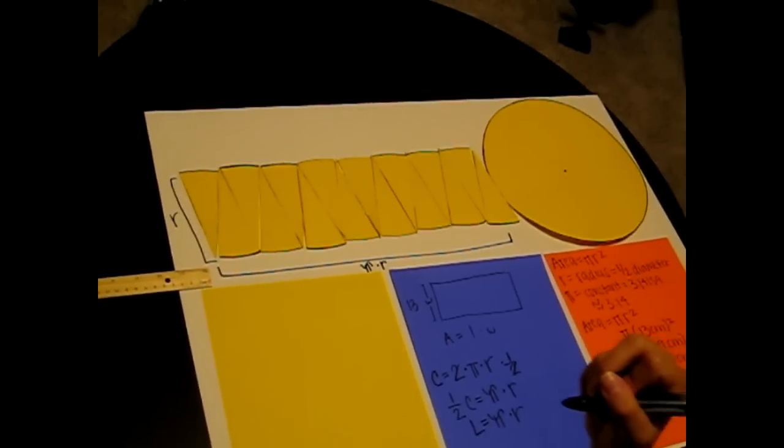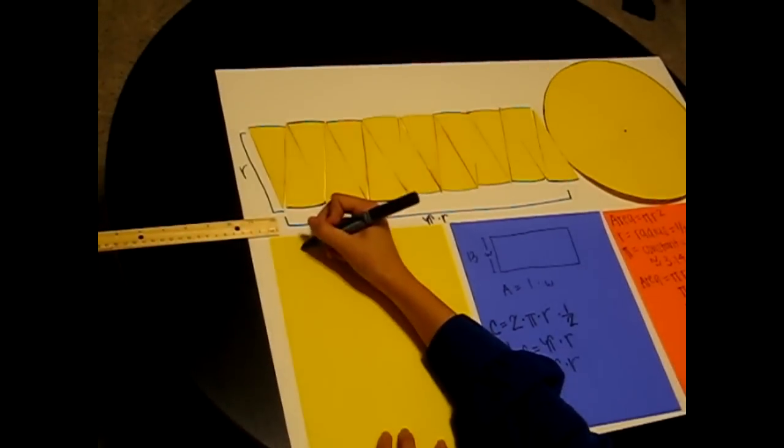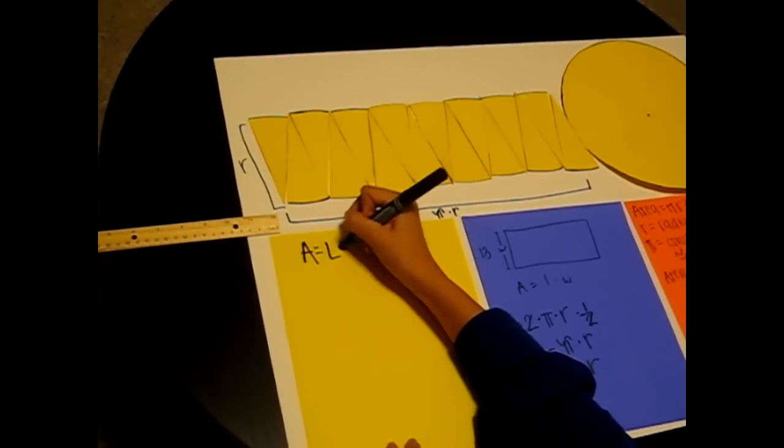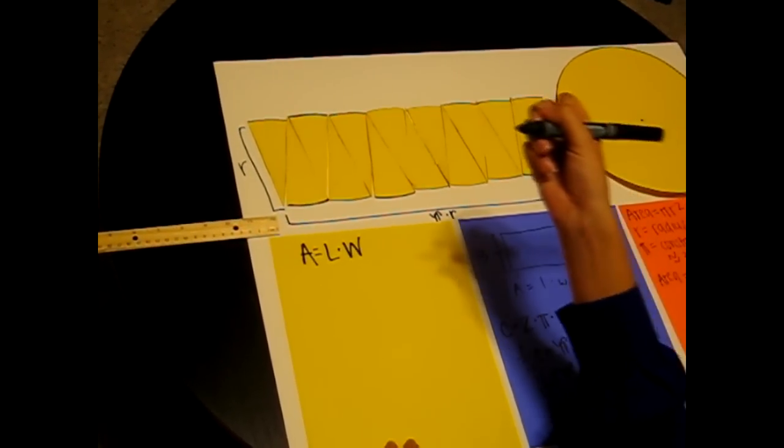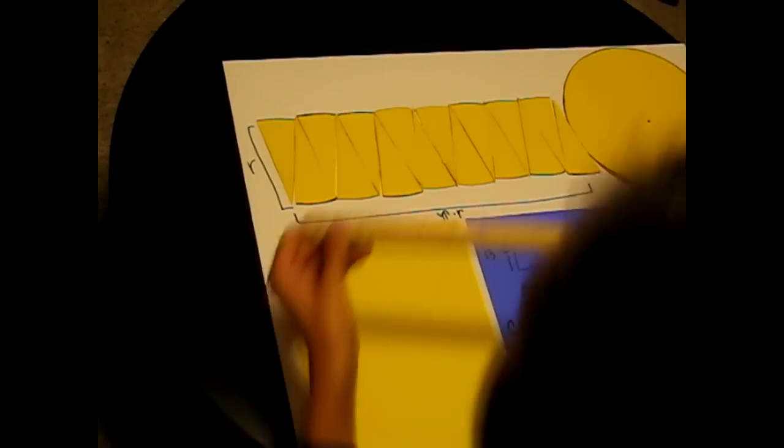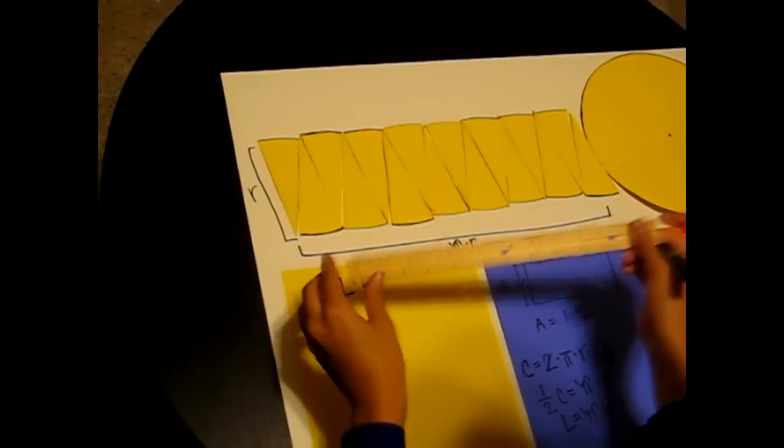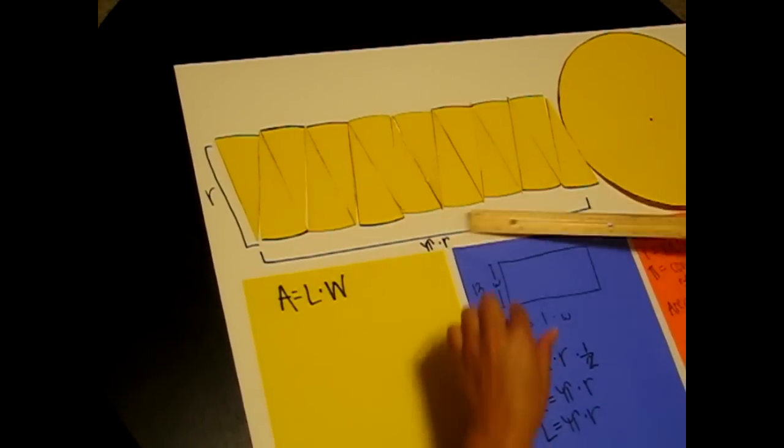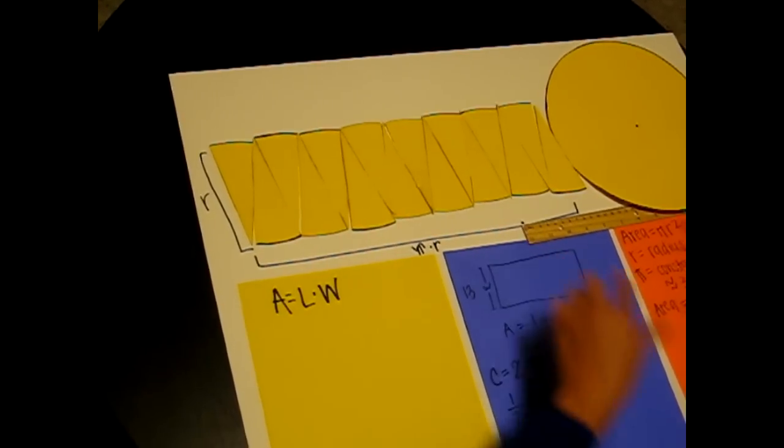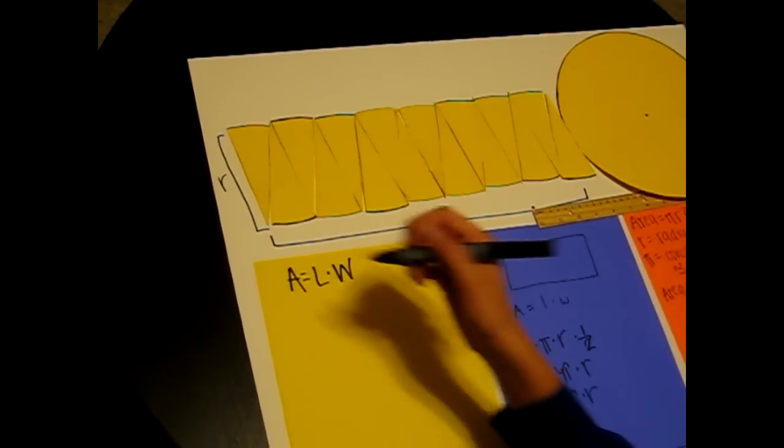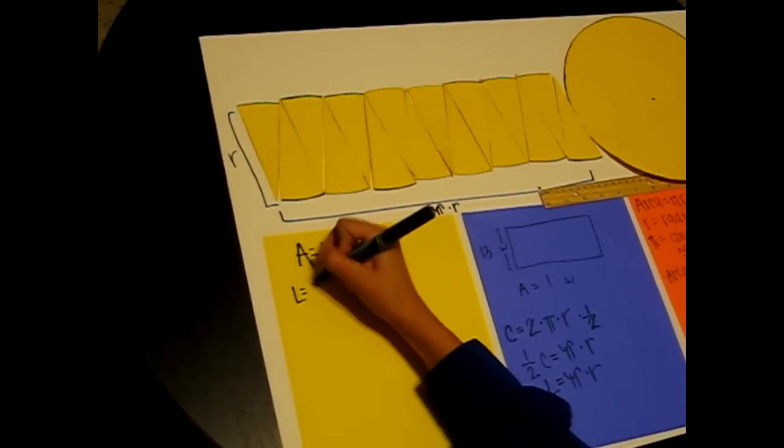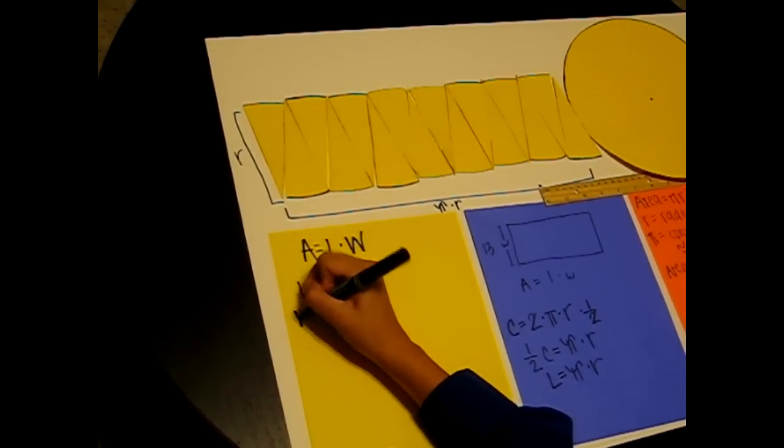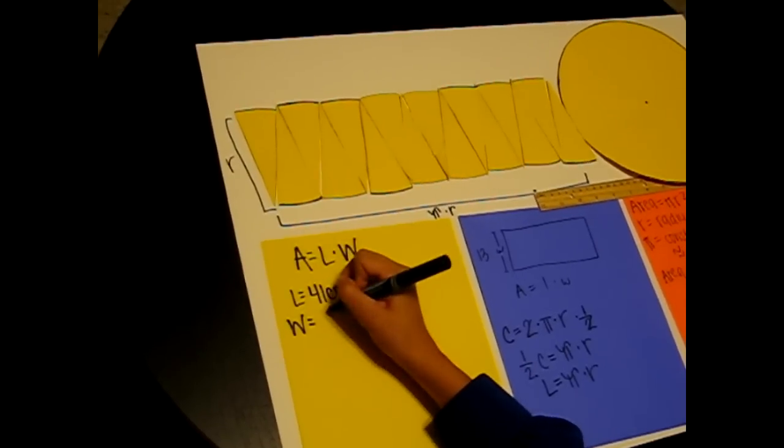So now we need to find the area of our rectangle. We know that the area equals length times width. So we need to find out what the length is. We know that it's about 41 centimeters. So length equals 41 centimeters. Earlier, we figured out that our width was 13 centimeters.